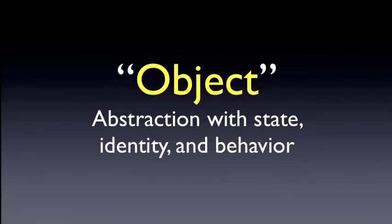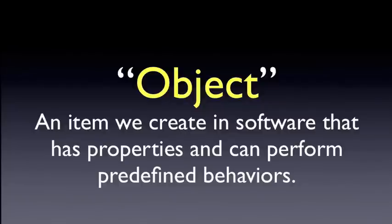So first of all, what is an object? Technically, an object is an abstraction that has state, identity, and behavior. We're not really ready for this definition yet, because we don't necessarily understand all of the concepts that would tie into this definition. So this is the formal definition of an object. This chapter, what we want to do is treat objects such that they are an item we create in software that has properties and can perform predefined behaviors.